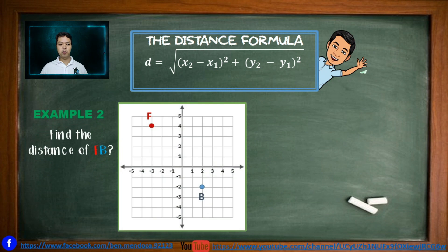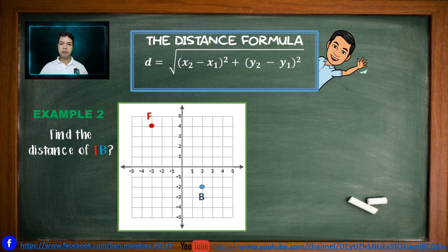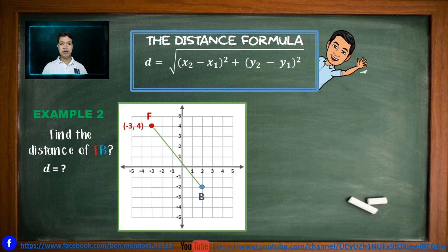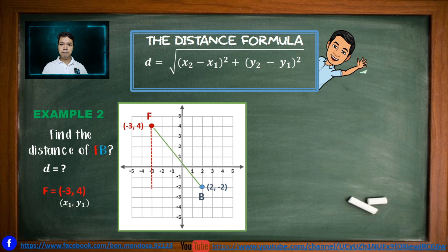Example number 2: Find the distance between the points F and B. Point F is in the second quadrant, while point B is in quadrant 4. To find the distance, we need the coordinates of point F and point B. Point F has a coordinate of negative 3, 4, while point B has a coordinate of 2, negative 2. We assign point F as our first coordinate and point B as our second point.